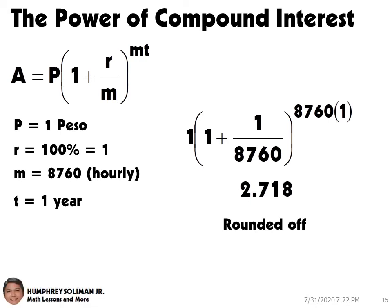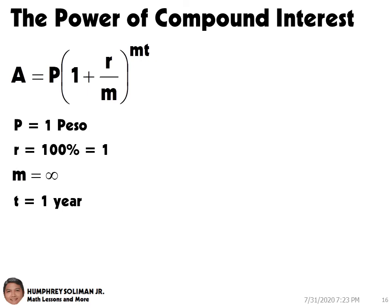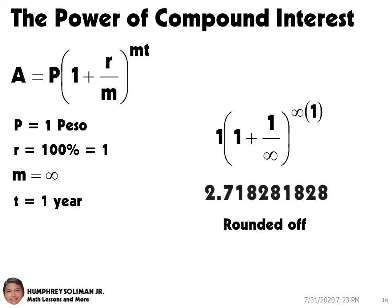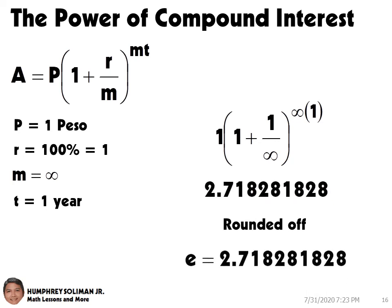So what happens if M gets really big? Say, as big as infinity? This is the question that Bernoulli was trying to answer. But it took 50 years for Euler to come along and solve it. It turns out the answer is the irrational number E, which is about 2.71828.